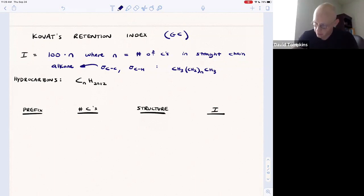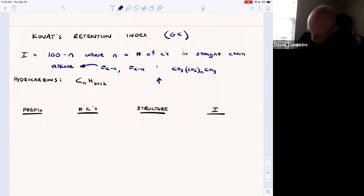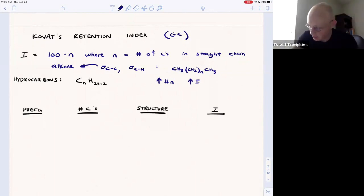If you increase the number of carbons, then we increase the retention index, or that compound is more strongly retained as a function of it having a higher boiling point. Recall that boiling point is the most important factor for determining retention time in gas chromatography.